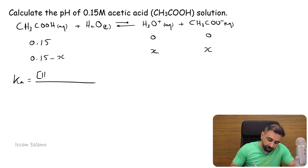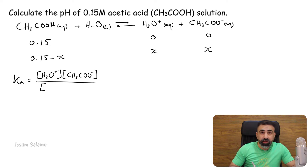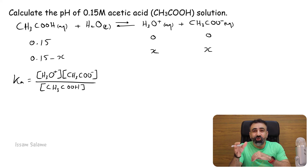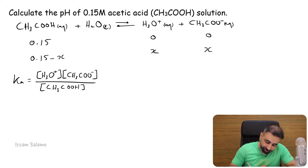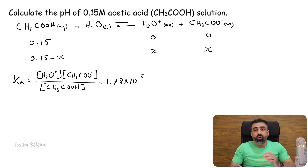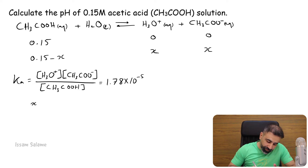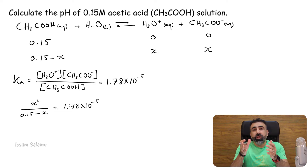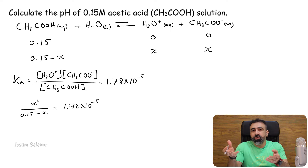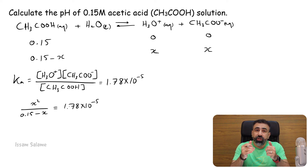So Ka equals the concentration of hydronium ions multiplied by the concentration of acetate ions, divided by the concentration of acetic acid at equilibrium. The ionization constant of acetic acid is equal to 1.78 times 10 to the power minus 5. If we replace the concentrations by their values, most books neglect x compared to the concentration of the acetic acid, since it's a weak acid that dissociates partially. So the denominator is going to be equal to 0.15.